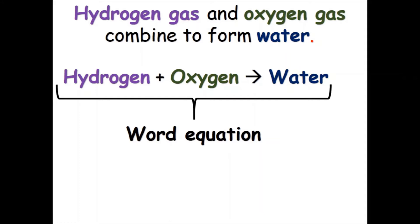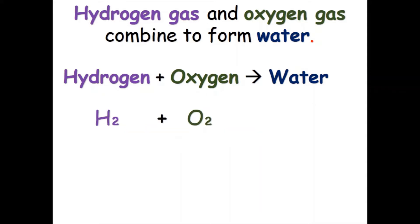Let's transform this word equation into a symbol equation. So for hydrogen we have H₂, then plus O₂ for oxygen, and this reacts to H₂O for water.